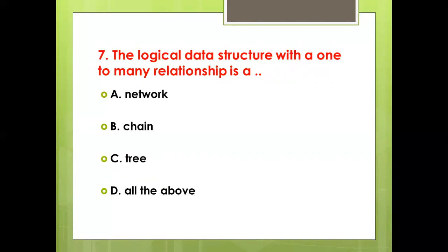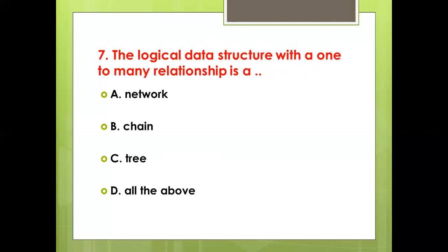Seventh bit: The logical data structure with a one-to-many relationship is a dash — Option A: Network. Option B: Chain. Option C: Tree. Option D: All the above. Answer: Option C, Tree.